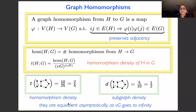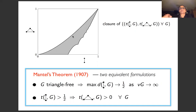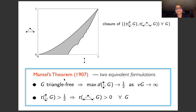Coming back to the graph profile picture: in terms of homomorphism density, you can view this profile as the closure of tuples of homomorphism densities of an edge and a triangle — and now you don't need graphs going to infinity; you can do this for every graph. These graph profiles are very useful, in particular they provide a language for extremal graph theory. For example, you may have heard of Mantell's theorem from 1907.